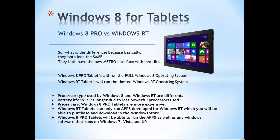With a Windows 8 Pro tablet, you can go to sites like winrar.com or winzip.com and download and install those programs — it's like having a full-fledged desktop in your hands in a tablet form factor. Windows RT tablets are simply tablets, whereas Windows 8 Pro tablets are full-fledged computers in a tablet form factor.